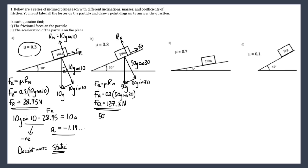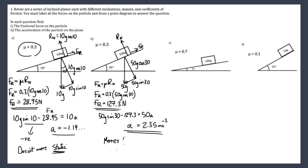The force down the slope is 50g sin30; we subtract our frictional force from this and set it equal to 50a. In this case 50g sin30 is bigger than the frictional force so it does move. Working through gives an answer of 2.35 m/s². The angle is big enough to overcome that frictional force.